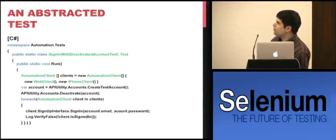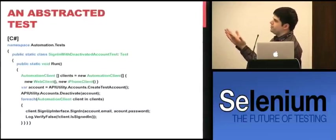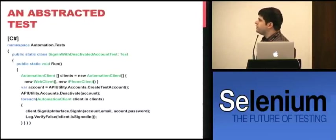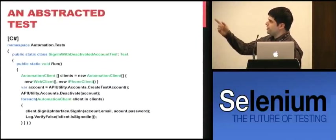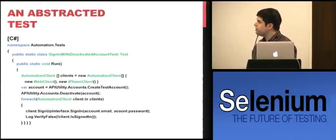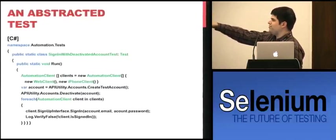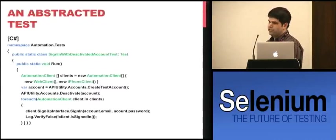Here's what an abstracted test looks like: we make an array of our different automation clients — a web client and an iPhone client — and put them in an array. We create a test account using a test API, deactivate it using the regular API, then for each client in our array — you could add an Adobe Air client or Android client — we use the signup interface to sign in, then verify that we're not signed in. You could add more validation through the API and look at the logs to check if the appropriate API error was produced.